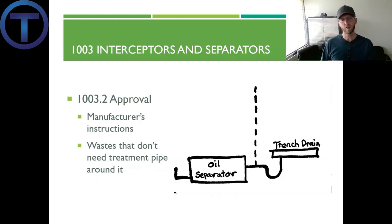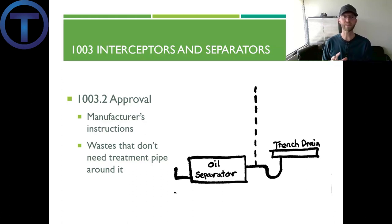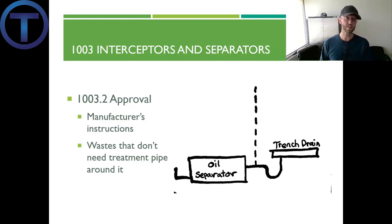Section 1003.2 talks about approvals. Anything we install with the intention of removing things has to meet some standards, and the code requires that we install these according to the manufacturer's installation instructions. Another provision is that wastes that do not need to be treated should not be piped through the separator — they should go around it.